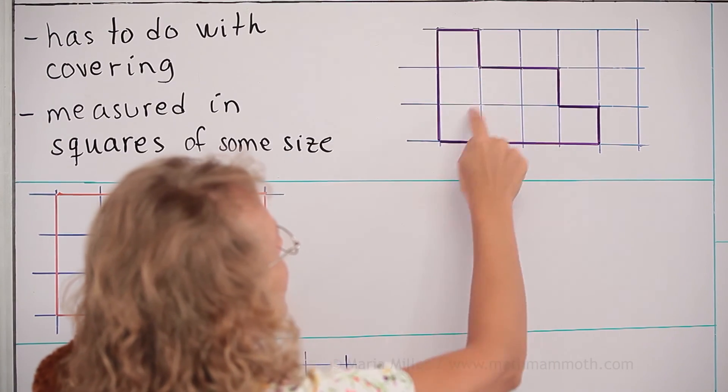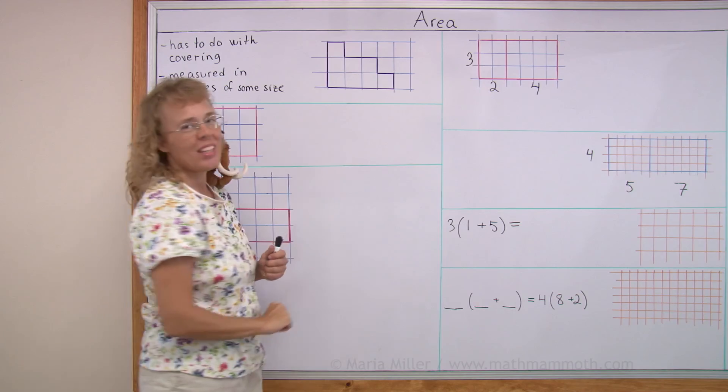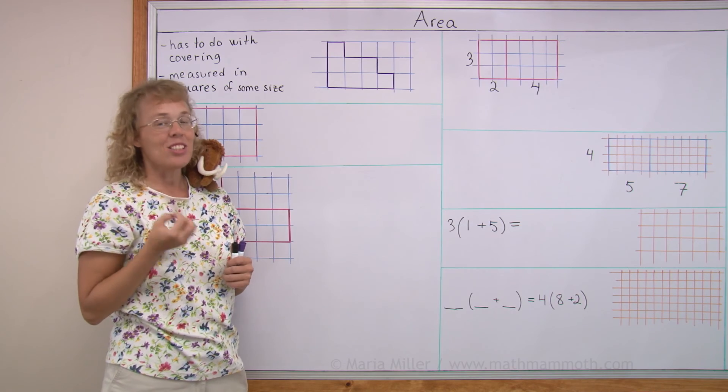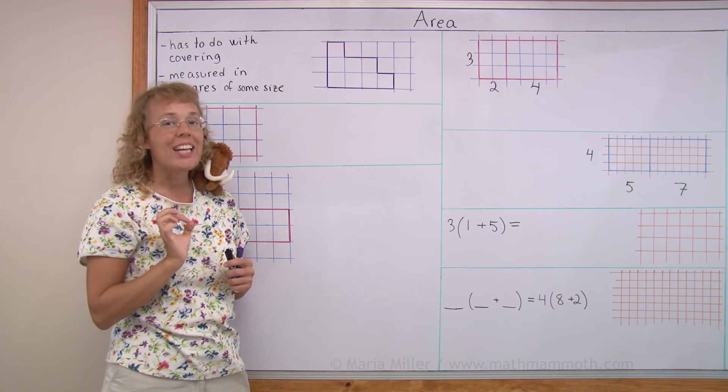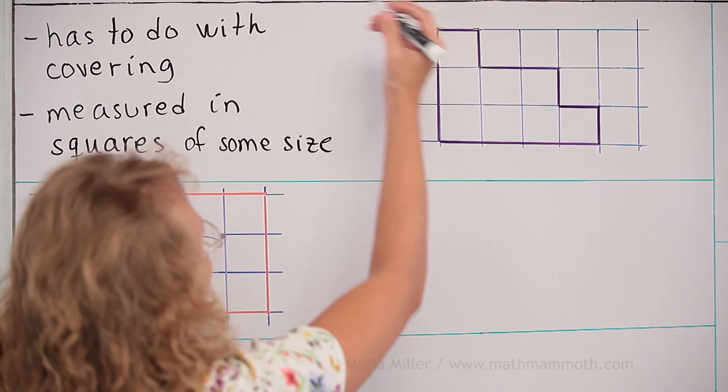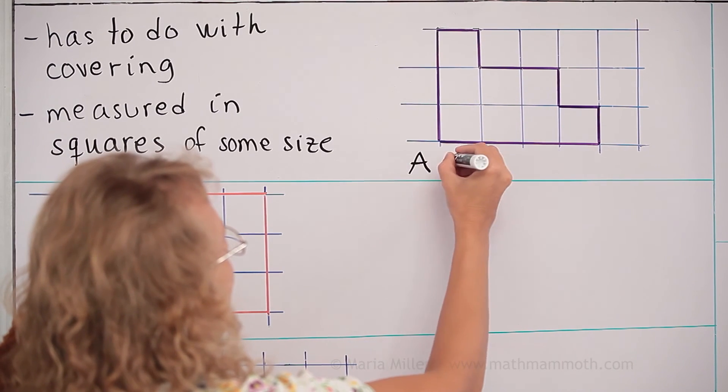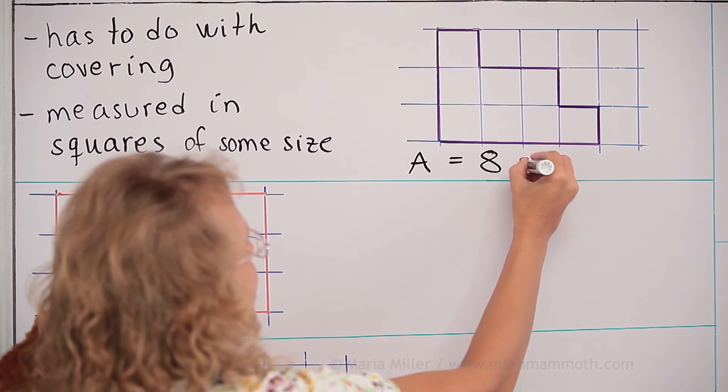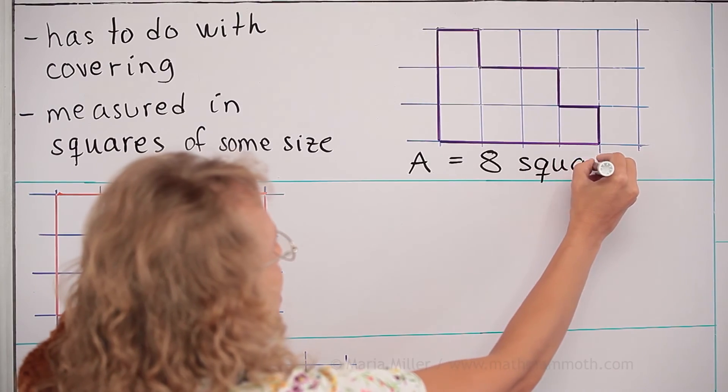So I can count 1, 2, 3, 4, 5, 6, 7, 8. So the area is 8 squares. Or we can say 8 square units. I'll just put it here. Area equals 8 squares in this case.